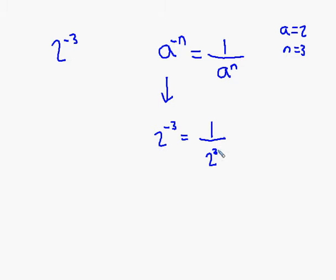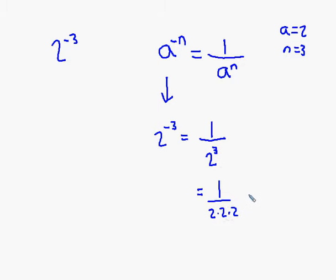Basically, the property says that if you have a problem where you have a negative exponent and you want to rewrite it with an equivalent value without the negative exponent, you can do it if you follow this property. In simplified form, 2 to the third power means you're taking the base 2 and multiplying it by itself 3 times, so you're going to get an 8 in the denominator.